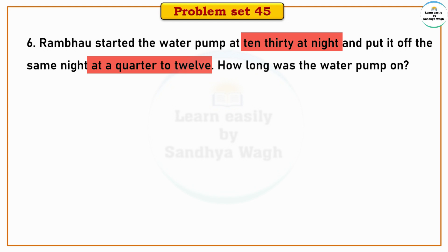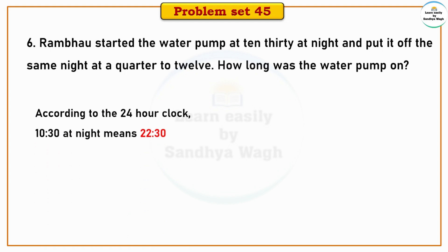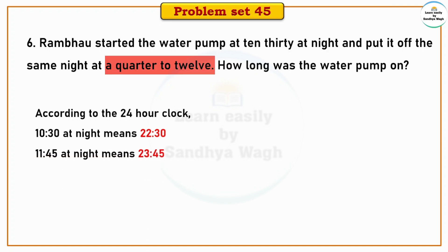According to the 24-hour clock, 10:30 at night means 22:30, and 11:45 at night means 23:45. We need to find how long the pump was running. We will use the 24-hour clock and find the answer by subtraction: 23 hours 45 minutes minus 22 hours 30 minutes.